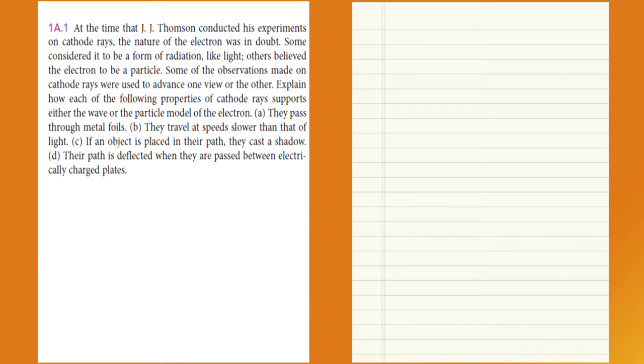Letter A: they pass through metal foils. Letter B: they travel at speed slower than that of light. Letter C: if an object is placed in their path, they cast a shadow. Letter D: their path is deflected when they are passed between electrically charged plates. So it's a theoretical question.